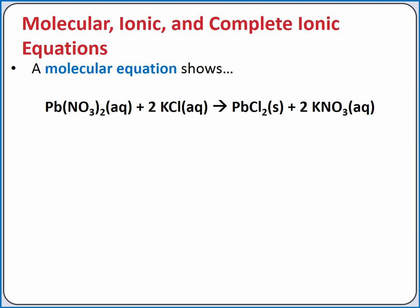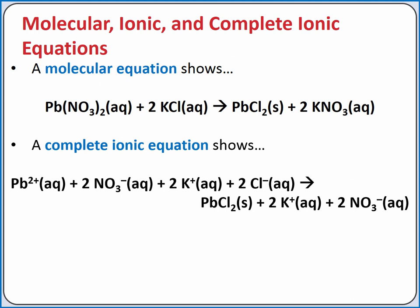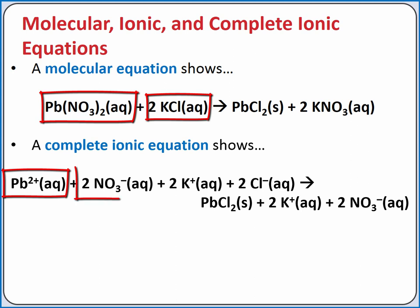Another way to represent the reaction is using the complete ionic equation, which shows strong electrolytes broken apart into their component ions. Soluble salts are strong electrolytes. So when lead-2-nitrate and potassium chloride are dissolved in water, they split apart into lead-2+, nitrate, potassium, and chloride ions.